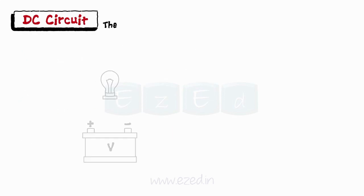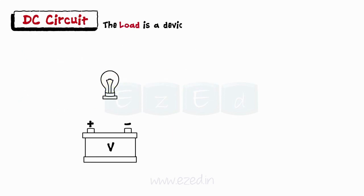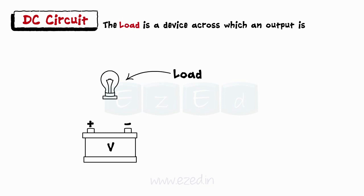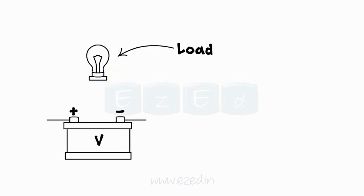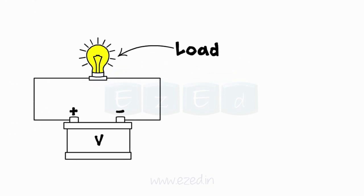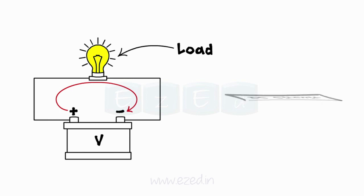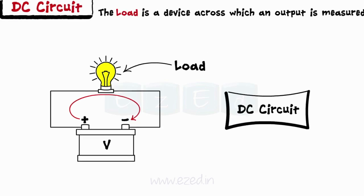The load is a device across which an output is measured. When the DC voltage source is connected to a load and the current gets a closed path to flow, the structure is called a DC circuit.